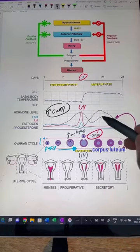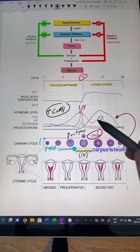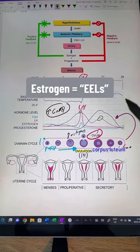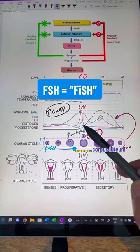It also secretes estrogen here, and how do you remember estrogen has two peaks? Well, remember eels. Eels has two E's, estrogen, two peaks. And fish, for FSH, has one eye, so one peak.